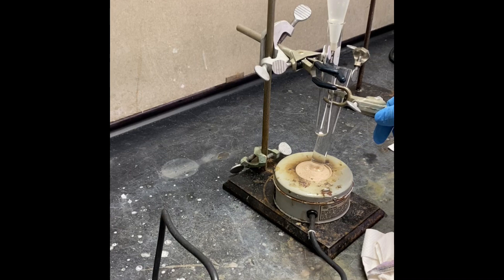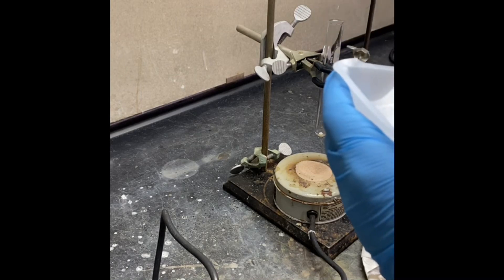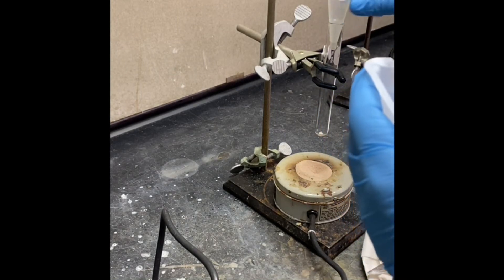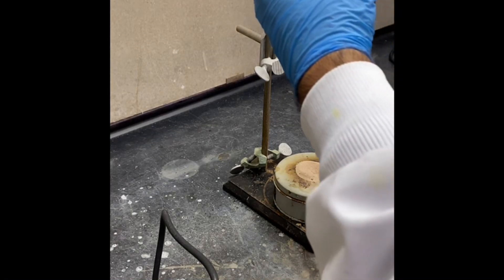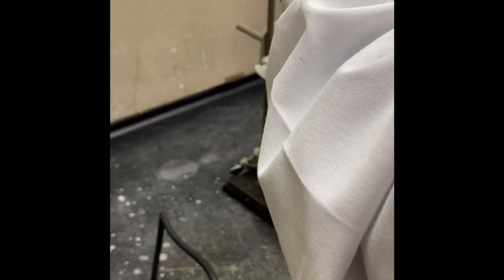I'm going to transfer my 3-nitrophthalic acid to the reaction flask. This test tube is going to be the reaction flask. I need to use a powder funnel to transfer the solid. I'll gently squeeze the rubber bulb and transfer one gram of the 3-nitrophthalic acid to the reaction flask.